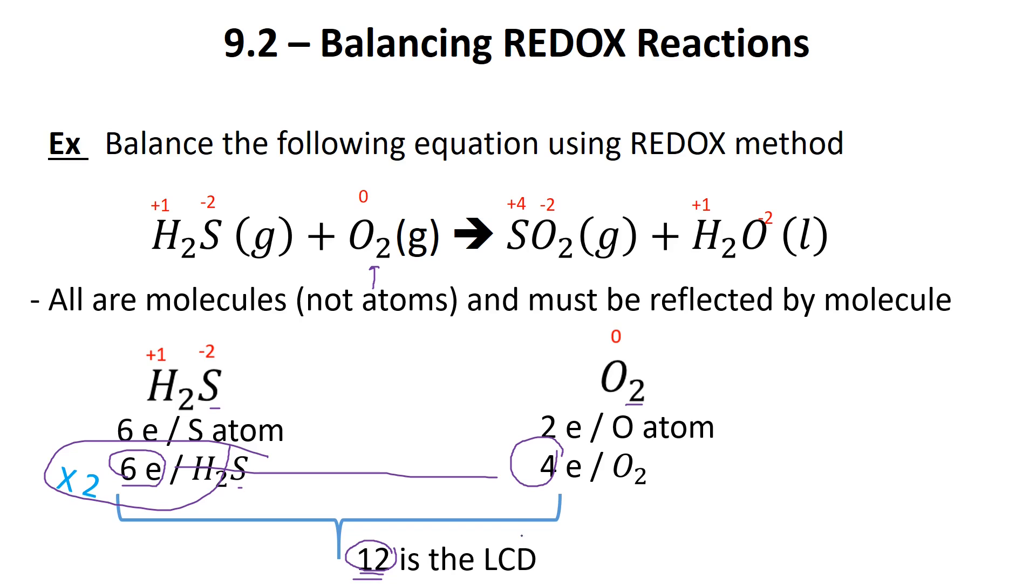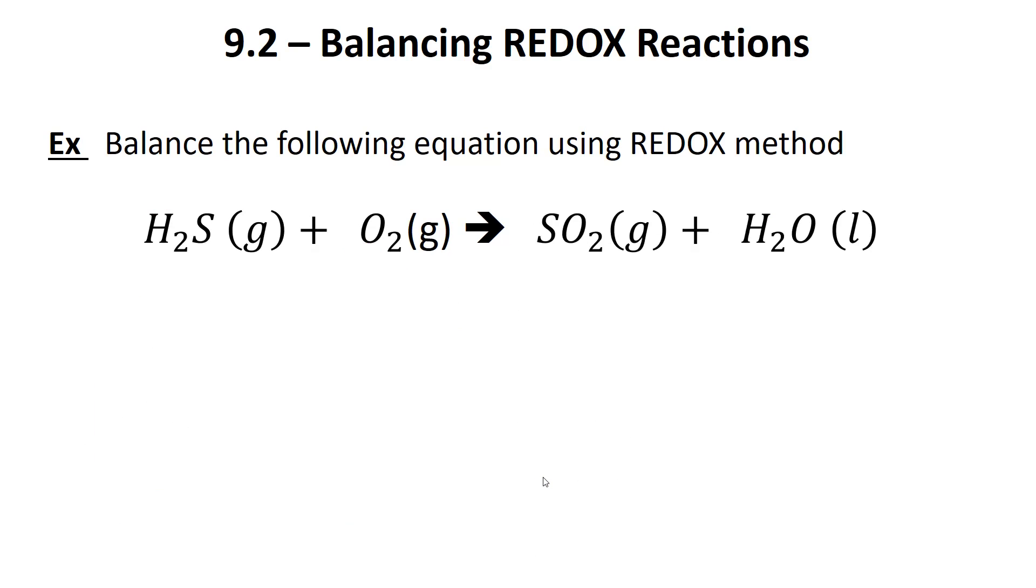We need to reflect that 12 is the lowest common denominator by looking at six and saying we need to multiply all of this by two because 2 times 6 gives us 12. On the other side, we've got four, so what number times four will give us 12? That's three. This two and three we've discovered are the coefficients that we're going to put into our equation.